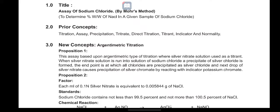The end point is reached when all chloride ions are precipitated as silver chloride. Silver chloride forms as a precipitate, which will be shown to you.